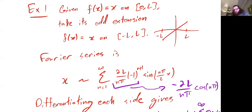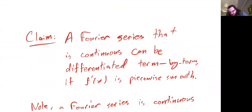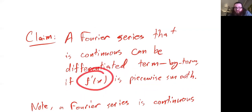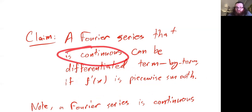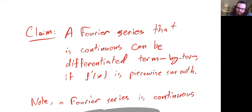The takeaway is: sometimes if you differentiate the series you end up with the Fourier series of the derivative; other times that doesn't happen. The claim is that if your Fourier series is continuous, then you can differentiate it term by term, assuming that the derivative of the function is piecewise smooth. The key condition in practice is that the Fourier series is continuous.